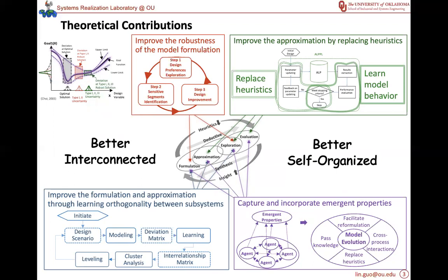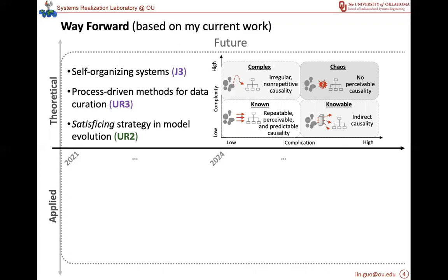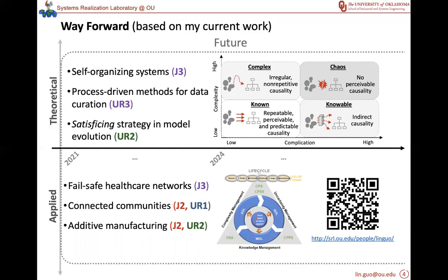So in summary, my PhD is about making different stages of the model evolution better interconnected so as to make a complex system better self-organized. Based on my PhD, I identify my future research in self-organizing systems, process-driven methods, and satisfying strategy. The applications include fusive healthcare networks, connected communities, technologies, and additive manufacturing. Welcome to explore my website. Thank you.